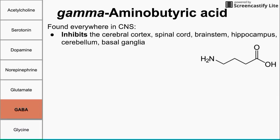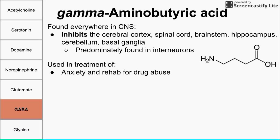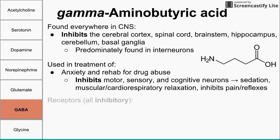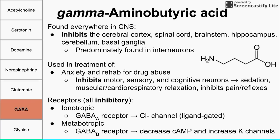Next is GABA, the universal inhibitor, also found everywhere in the central nervous system — the counterpart to glutamate. It's predominantly found in interneurons. GABA is used to treat anxiety and drug abuse rehabilitation, where it inhibits everything. The receptors for GABA are GABA-A and GABA-B, both inhibitory. GABA-A is ionotropic and specifically opens ligand-gated chloride channels, producing an inhibitory effect. GABA-B is metabotropic, decreasing cyclic AMP and increasing potassium channel activity, also producing an inhibitory effect.